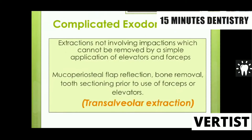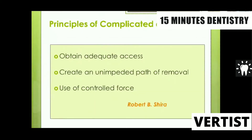If you fail to do the normal extraction, you have to follow the complicated method of extraction, also called the transcellular method of extraction. This involves extractions not involving impactions which cannot be removed by simple application of elevators or forceps. In this method, we follow certain procedures: we do the reflection of the flap, we do the bone cutting, we do the sectioning of the tooth, and then with the help of forceps and elevators, we do the extraction.